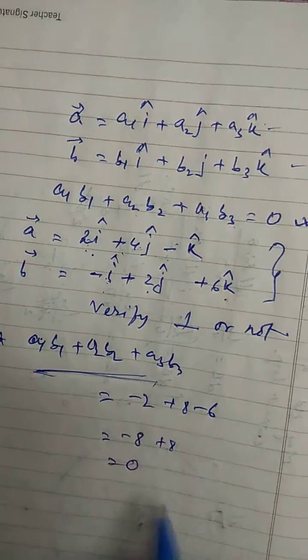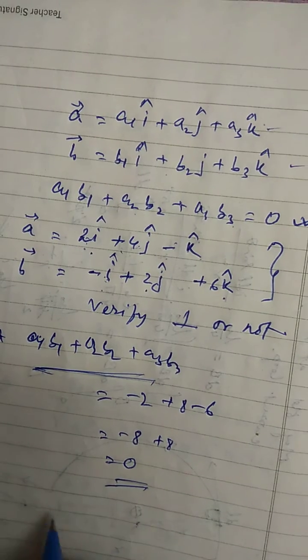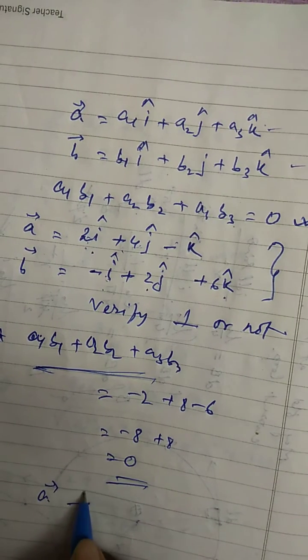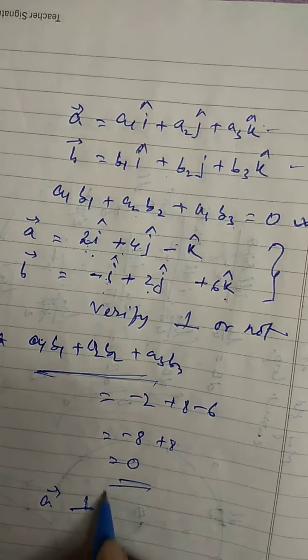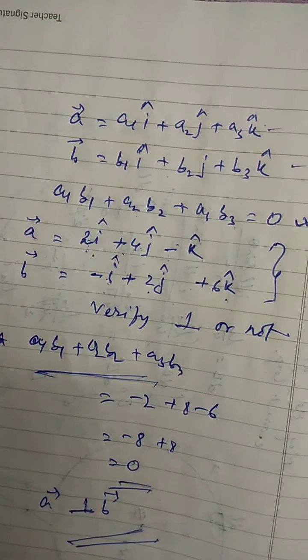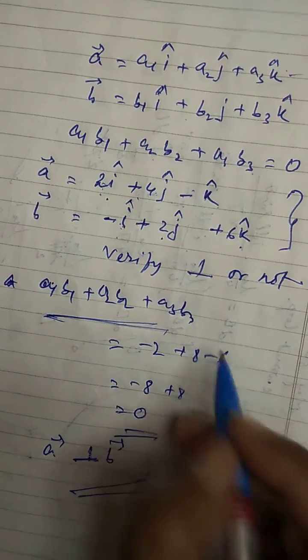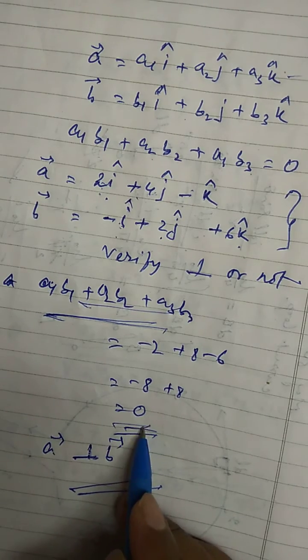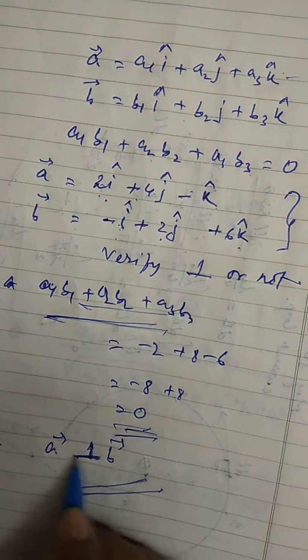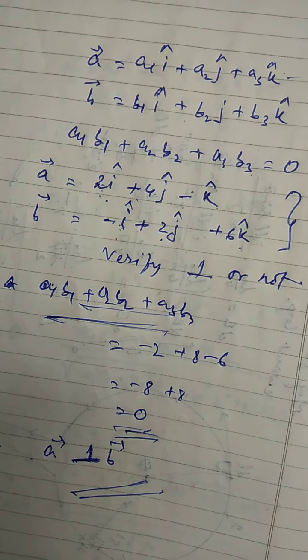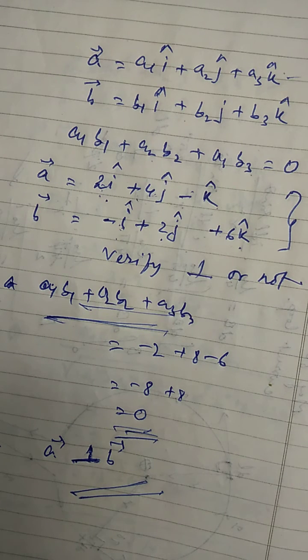Therefore, this value is equal to 0. Therefore, vector a is perpendicular to vector b here. If this is equal to 0, then we can say that two vectors are perpendicular to each other. This much only.